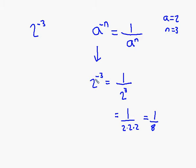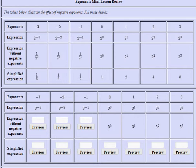So 2 to the negative 3 is equivalent to 1 over 2 to the third, and that is the same value as 1 over 8. Going back to the problem, you can see they wrote 1 over 2 to the third in simplified form as 1 over 8.